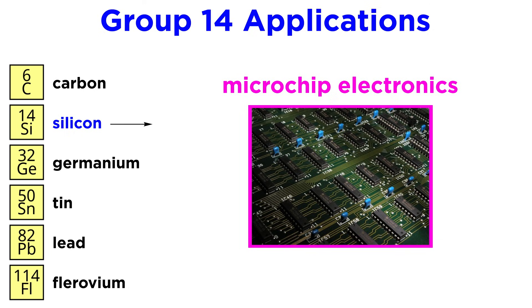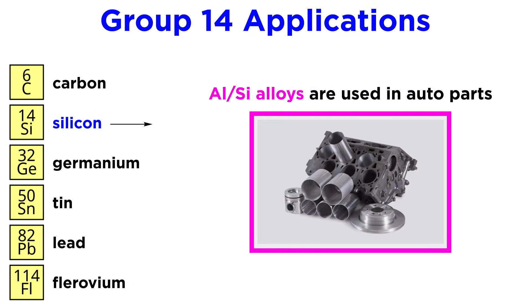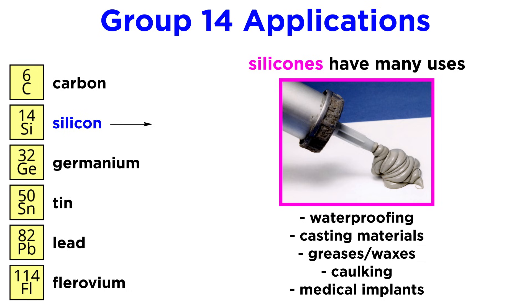For silicon, the applications should also be quite familiar, as it is crucial for microchip electronics and therefore virtually every bit of advanced technology we use every day. Silicon is also used in aluminum-silicon alloys for auto parts. Silicones are used for waterproofing, casting materials, high temperature greases and waxes, caulking, and medical implants.